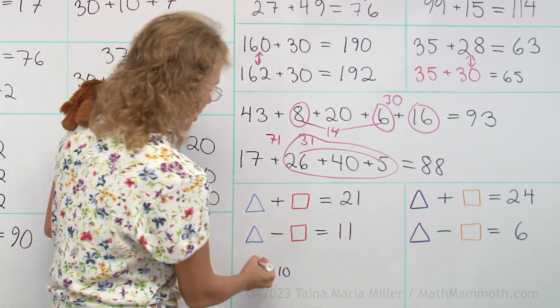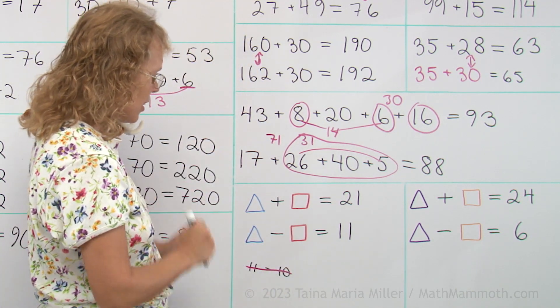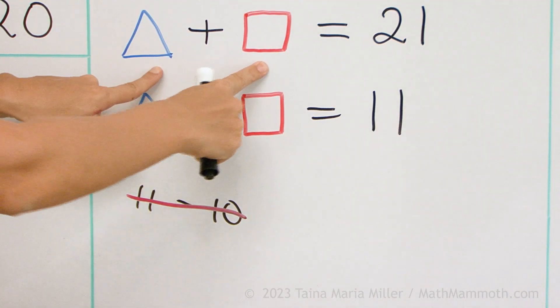So we need to scrap this idea. In other words, this did not work. So then try something else, some other two numbers that add up to 21.